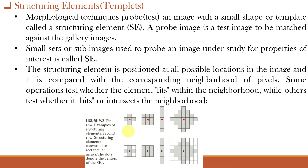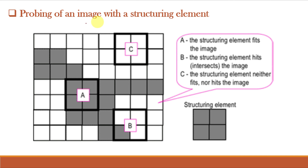The second row shows the same structuring elements converted to rectangular arrays for image processing. This cross as a rectangular array looks like this — the other elements are empty. Some operations test whether the element fits within the neighborhood, while others test whether it hits or intersects the neighborhood. Testing of an image with a structuring element: if we keep the structuring element here, it fits the image because all the pixels are fitting within the image.